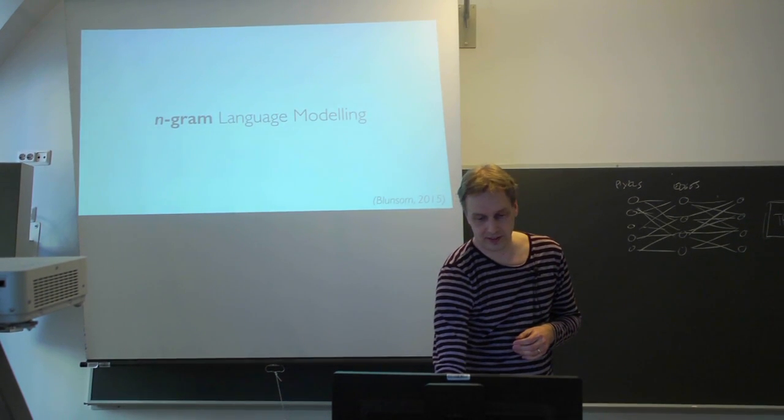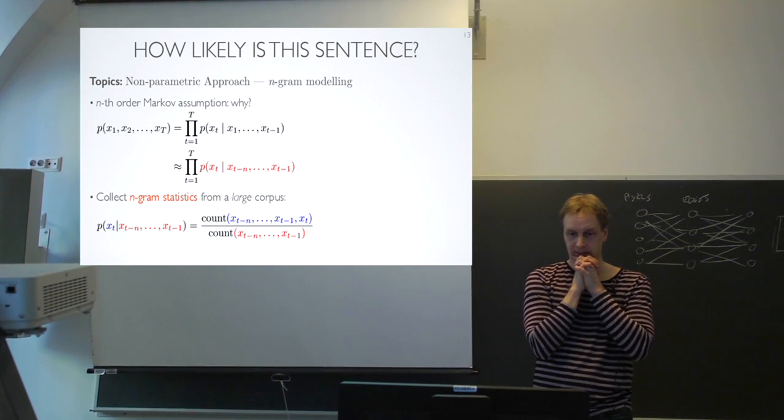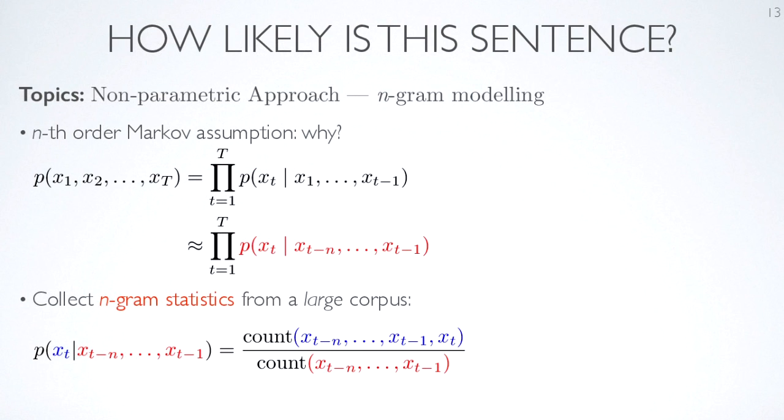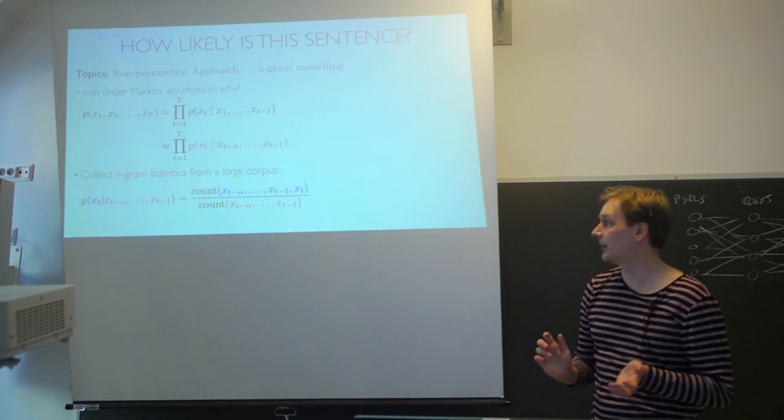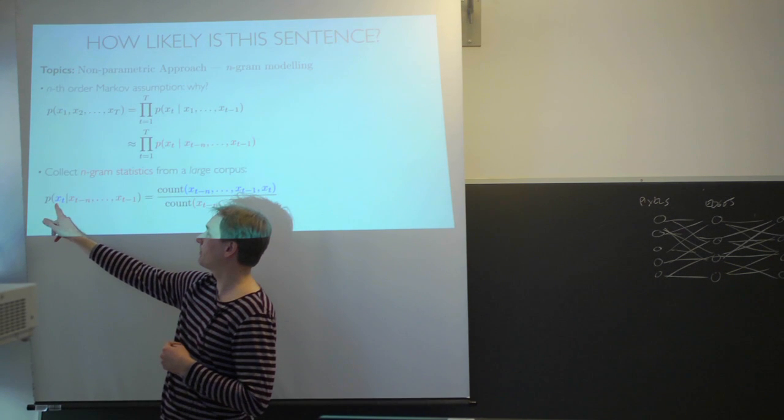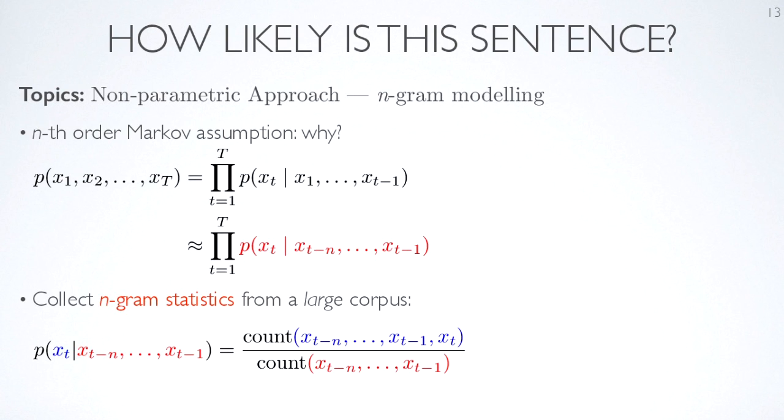So basic language modeling approach is n-grams, where we would simply count how often a particular combination of words appears. So we take n consecutive words and count how often this string appears in a large corpus of text. And then with those statistics, we can compute the probability of the next word as using those counts. So those counts would tell you how often in a particular context the next word has been this or whether the next word has been some other one.